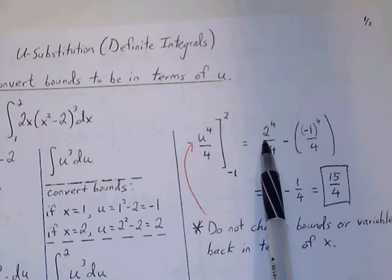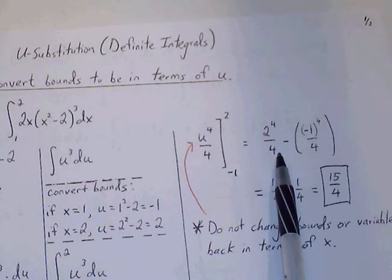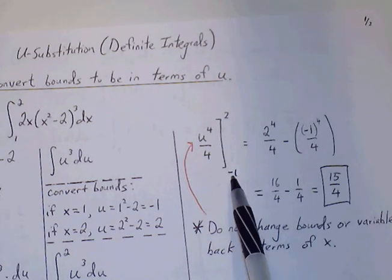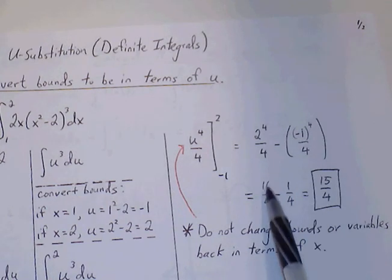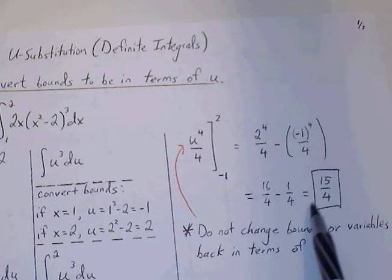Plug in our upper and lower bounds. So we get f of b, so 2 to the 4th over 4, minus plug in a for f of a. So negative 1 to the 4th over 4.